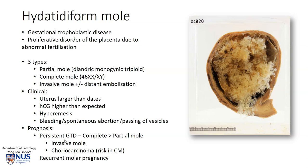In terms of prognosis, this is variable. There may be persistent gestational trophoblastic disease. The risk is somewhat higher in a complete versus a partial mole. There may be persistence in the form of persistent molar pregnancy or an invasive mole, or even malignancy, which is choriocarcinoma. This is associated with complete mole rather than partial mole. In addition, subsequent pregnancies may also be molar in nature.